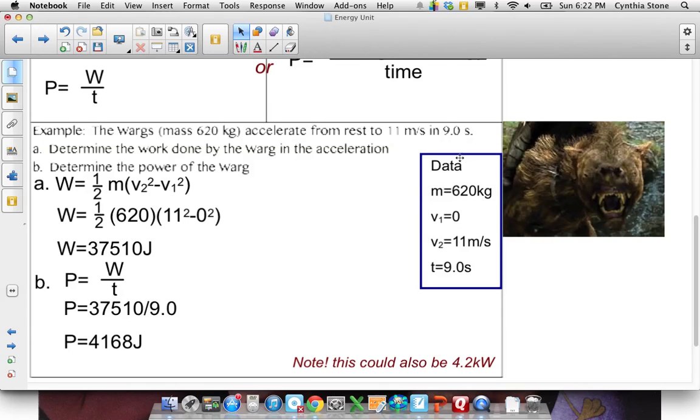If you have two speeds, which is zero and 11, and you've got a mass, you can use the work energy theorem to find the work. Okay? So you find the work. And then to find the power, you take that work and divide it by the time, which is nine seconds.